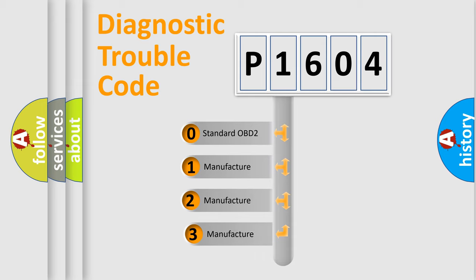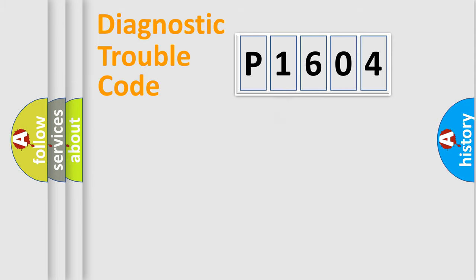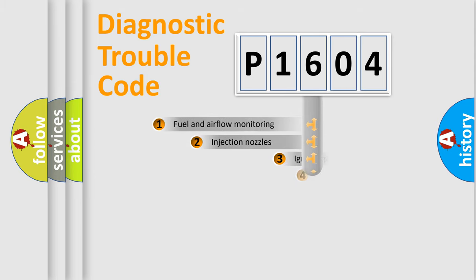If the second character is expressed as zero, it is a standardized error. In the case of numbers 1, 2, 3, it is a manufacturer-specific expression of the car-specific error.